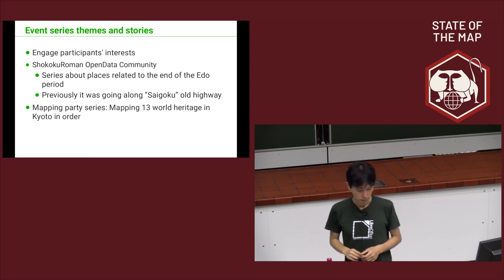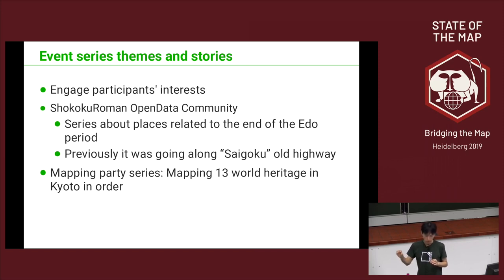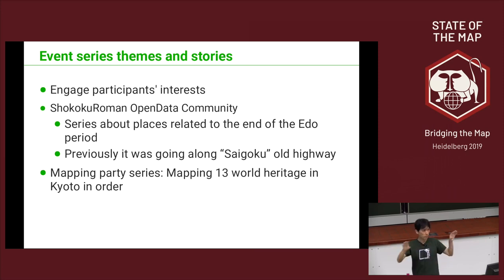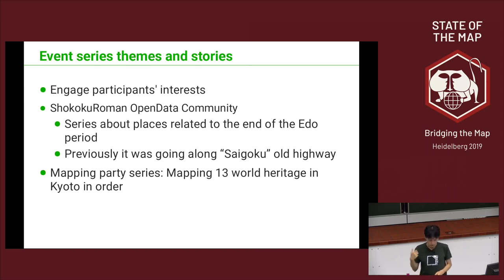We focus on an event series. The Shoko Chroma Open Data Committee series is themed around the end of the Edo period, moving along the old highway through cities regularly. Another case is the mapping party in Kyoto, which has 13 World Heritage Sites — so all the World Heritage sites are being mapped. That's a very nice focus point.